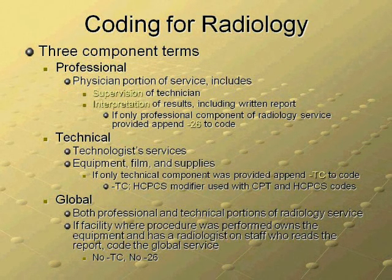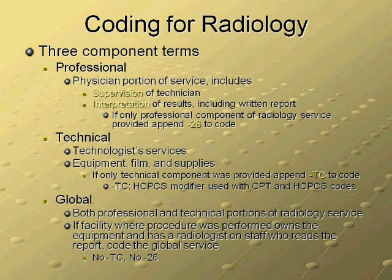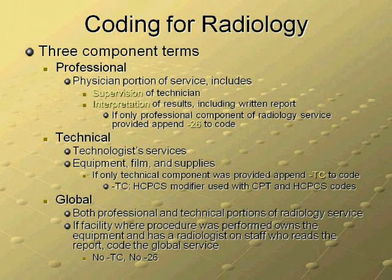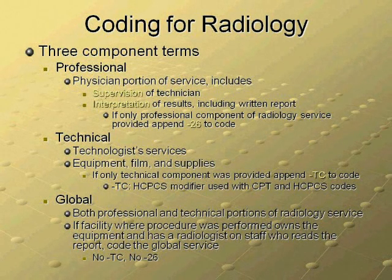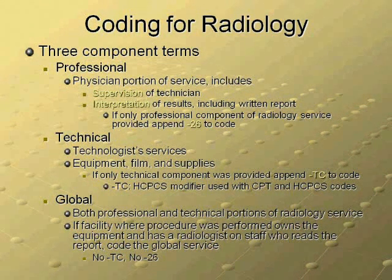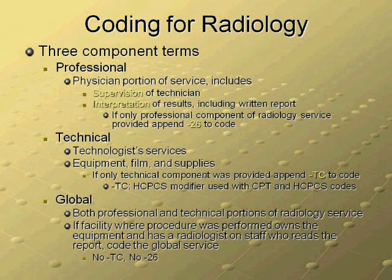There are three components to radiology coding. The professional component describes the services of the physician, including supervision of the taking of the x-ray film and interpretation of the x-ray films with the report. Modifier 26 is used if only the professional component is being coded. The technical component describes the services of the technologist and the use of equipment, film, and other supplies. Modifier TC is appended if only the technical portion is being coded. A global procedure includes both the professional and the technical components of the service, and in this case no modifier is required.